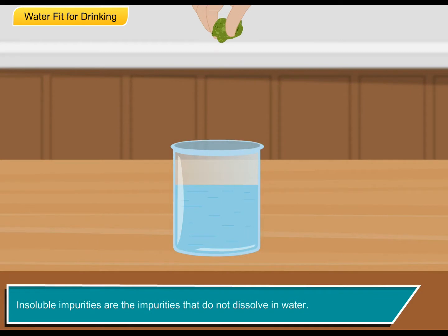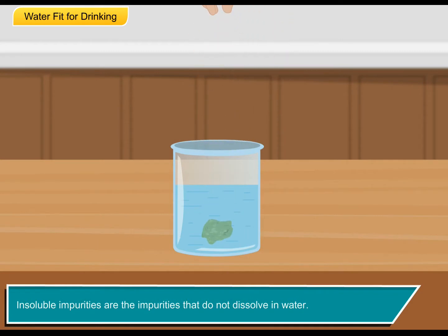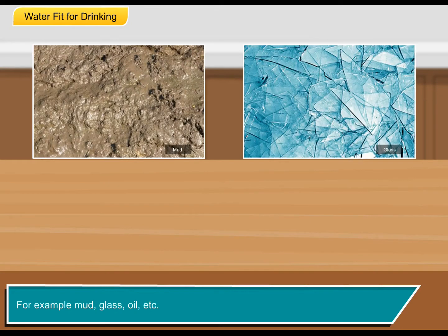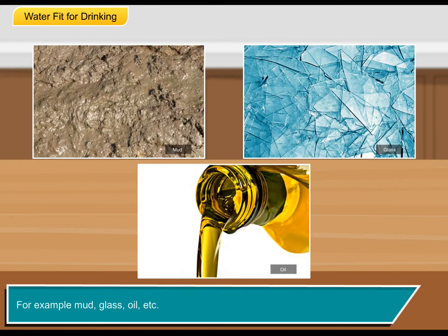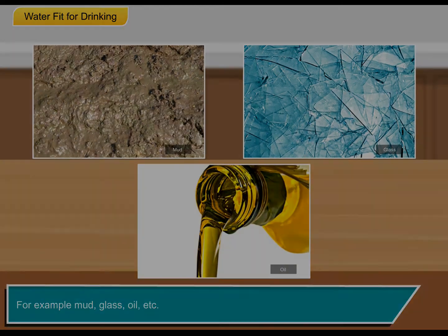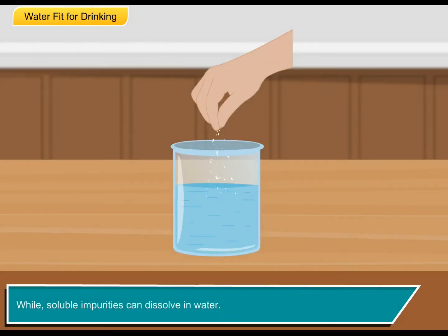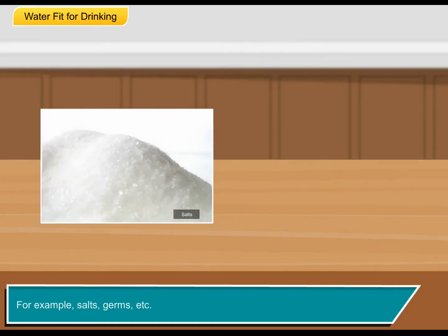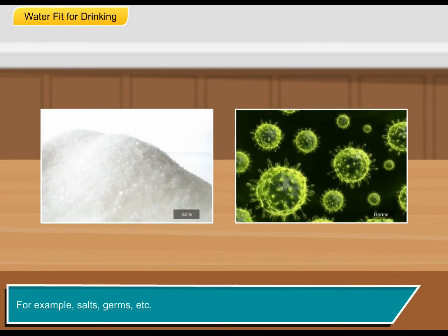Insoluble impurities are the impurities that do not dissolve in water, for example, mud, glass, oil, etc. Soluble impurities can dissolve in water, for example, salts, germs, etc.